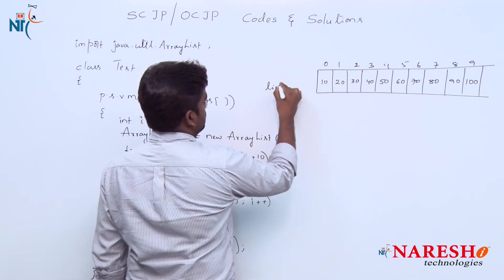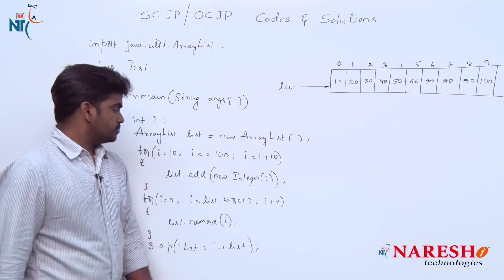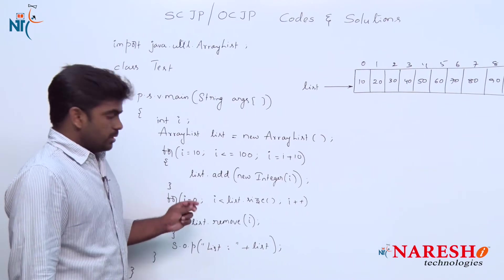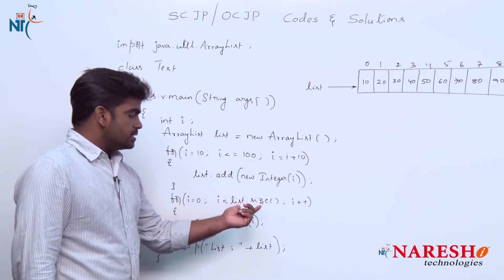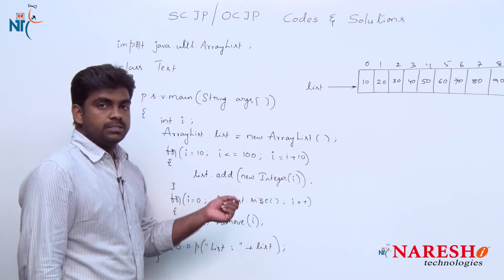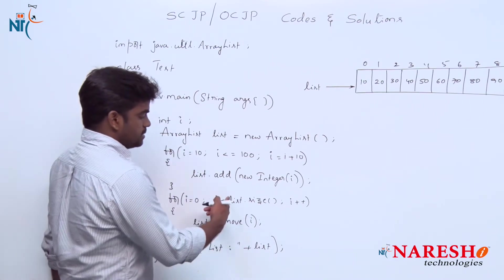The list is pointing to this block by holding the address of the block. Now is the removal. i value starts with 0 index. i is less than list.size. Initially the size is 10.